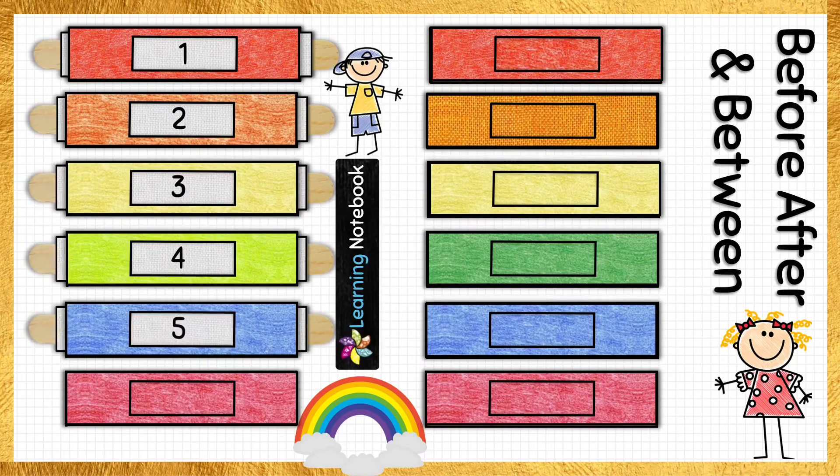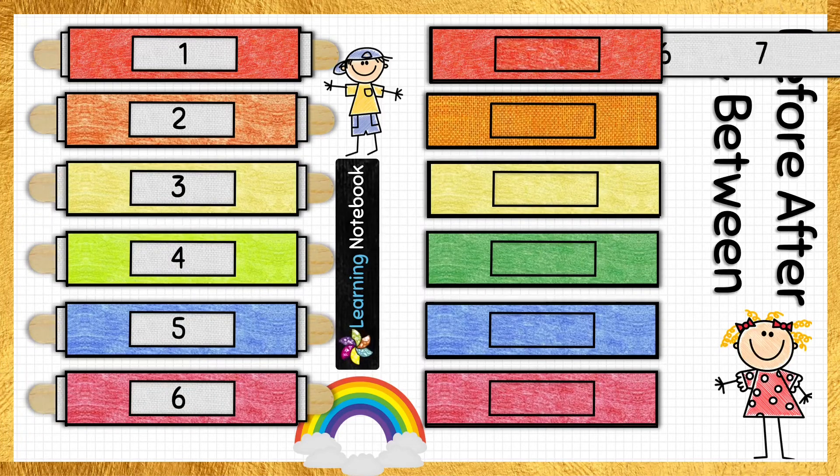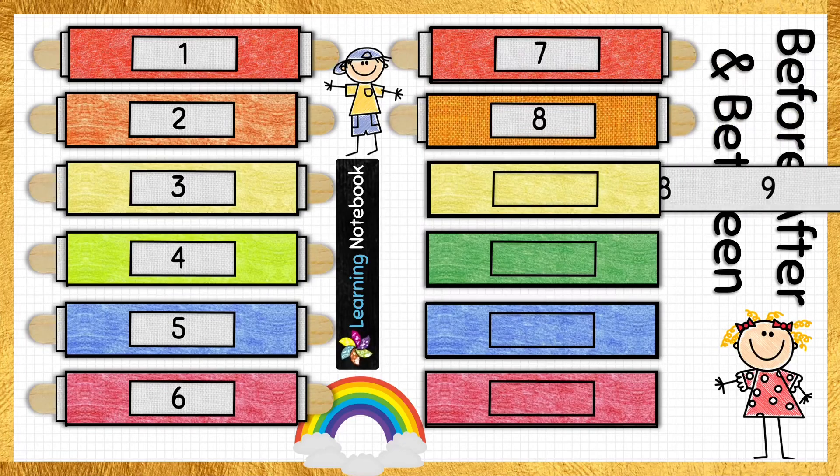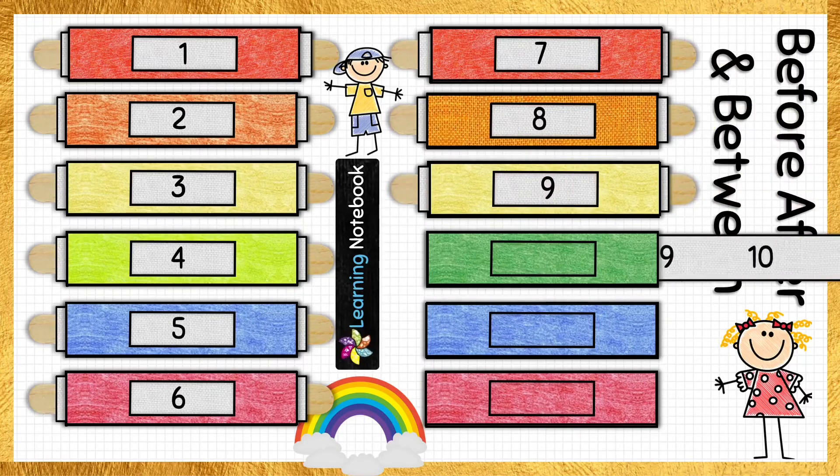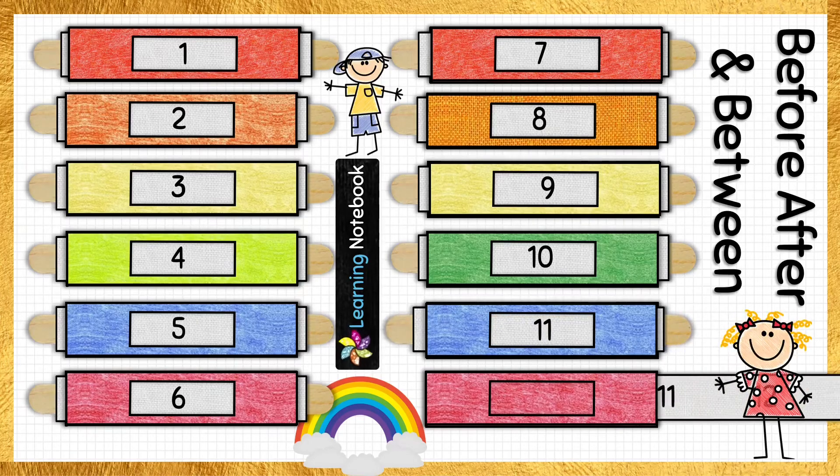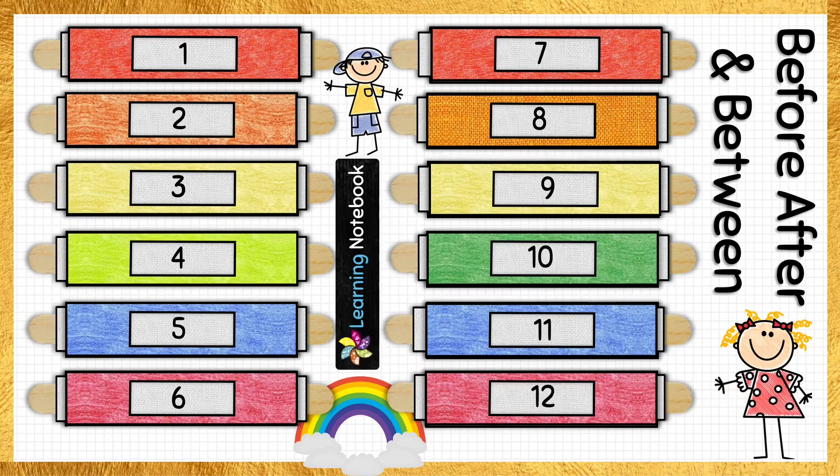So now we will insert the ice cream sticks in each of these 12 pockets. So it means ice cream sticks depicting numbers 1 to 6 will come in the first column and ice cream sticks with numbers 7 to 12 in the second column.